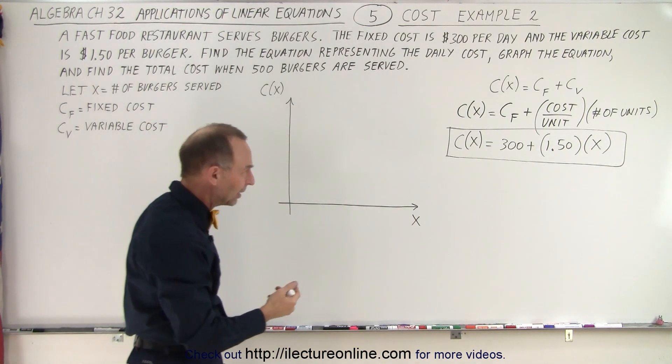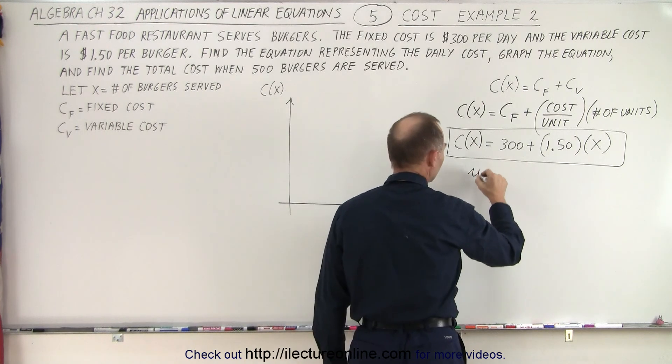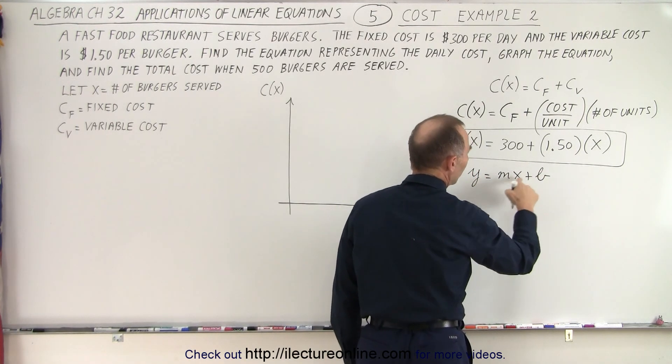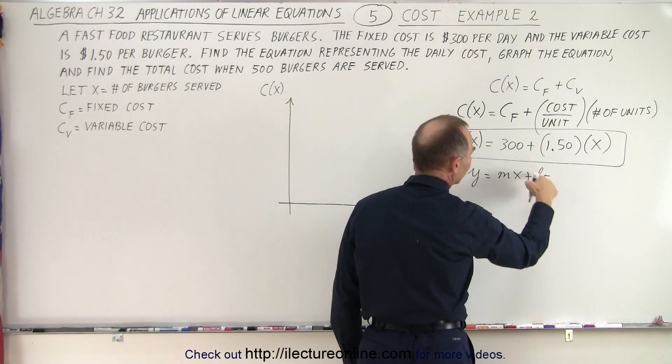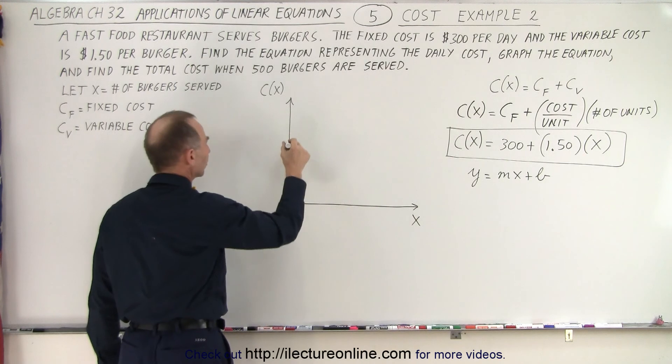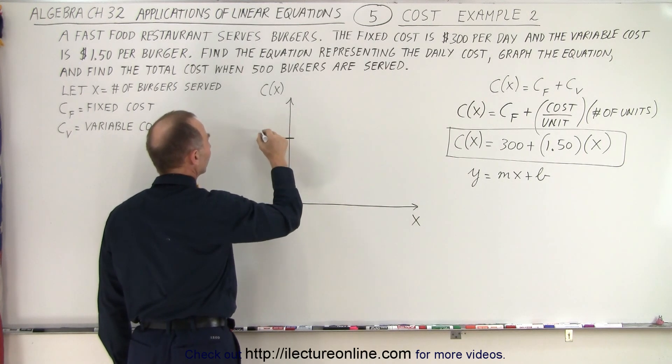So how would we graph that? Again we compare that to the equation y equals mx plus b, where m is the slope and b is the intercept. In this case b is 300 and m is 1.5. So let's find 300 on the graph. So there's the fixed cost, 300.